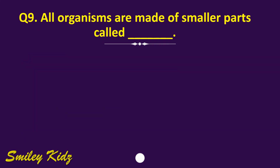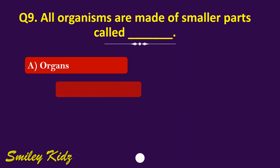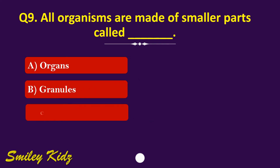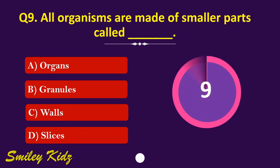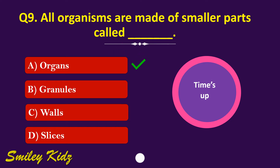Question number 9. All organisms are made of smaller parts called dash. The options are: A. Organs, B. Granules, C. Balls, or D. Slices. Your time starts now. Your time is up and the right answer is option A. Organs. All organisms are made of smaller parts called organs.